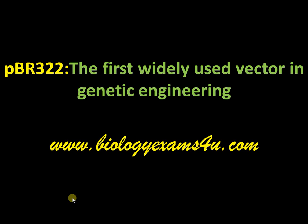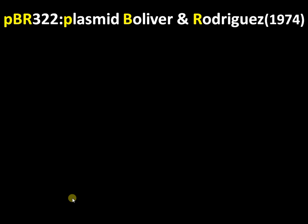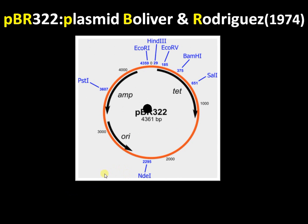In this tutorial we are going to discuss pBR322, the first widely used vector in genetic engineering. The name pBR322 was named after its discoverers Bolivar and Rodriguez in the 1970s. We will be discussing all the elements of this particular vector in detail.